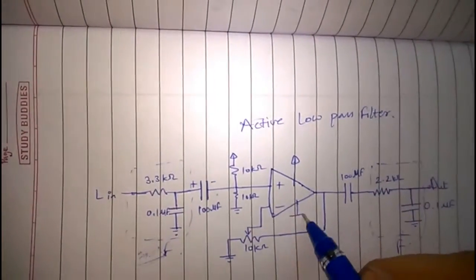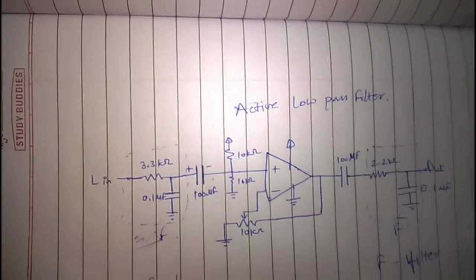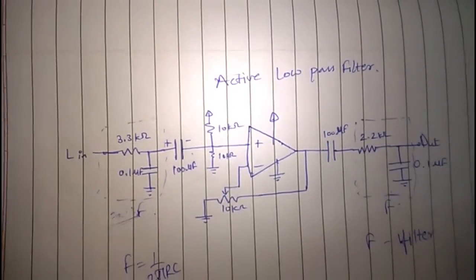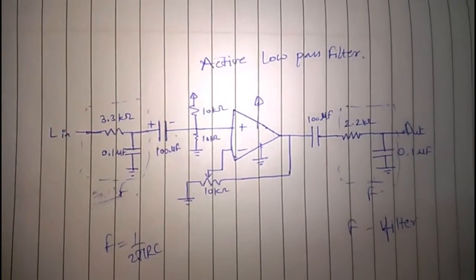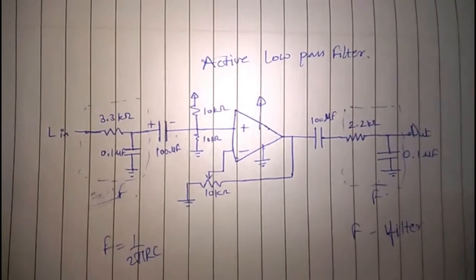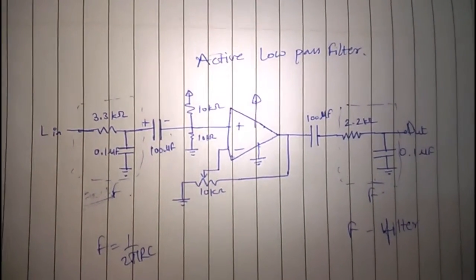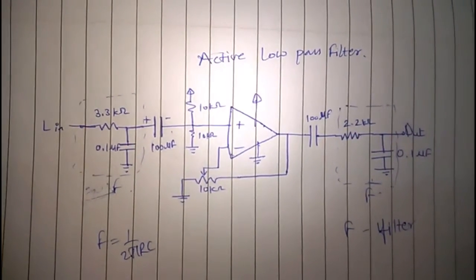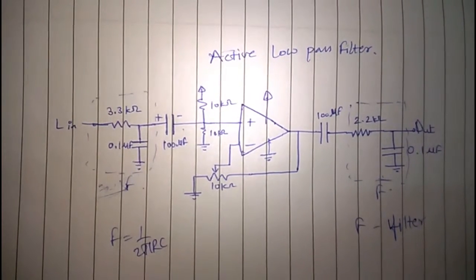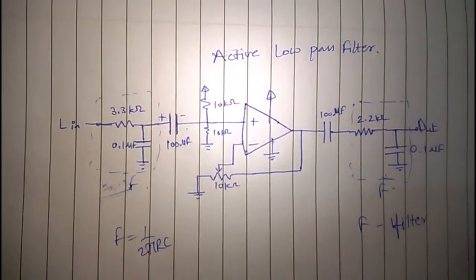After that I superimpose it on a DC level because my operational amplifier is operating on a single power supply - it does not have a negative rail, it's just plus 5 volts and ground.